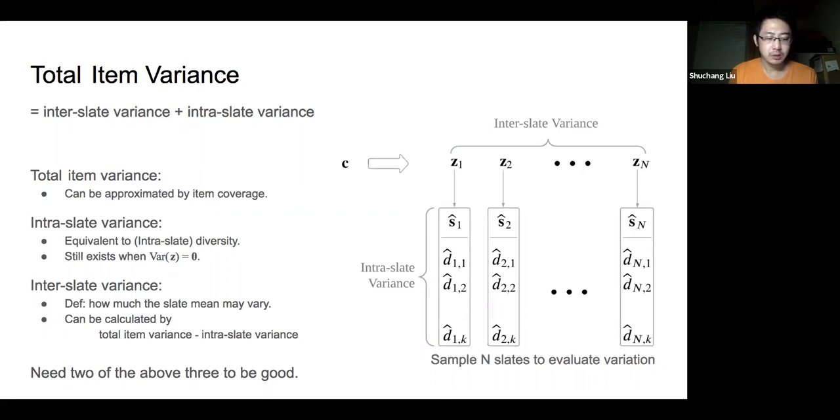Intuitively, it is undesirable to have a model that can explore different slates but each slate has many duplicated items. And on the other hand, if a model can generate diverse items in each slate but it always generates this prototype slate, then the recommendation system becomes unfair for some items. This tells us that we need to evaluate both measures in order to fully understand how the generative model works.